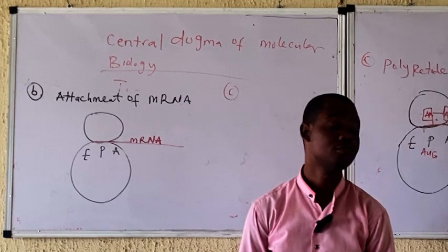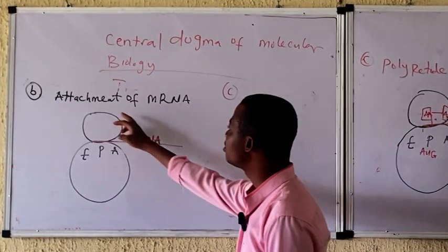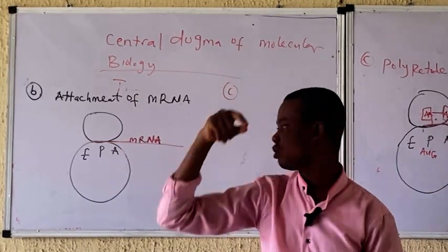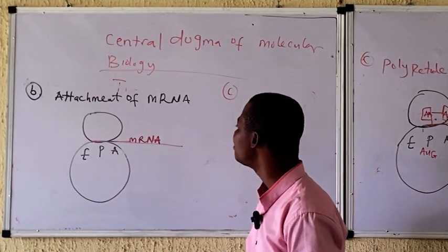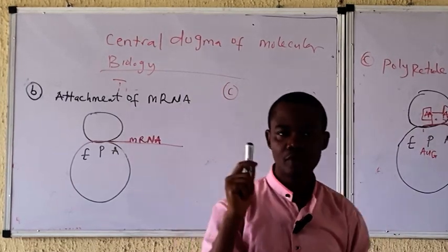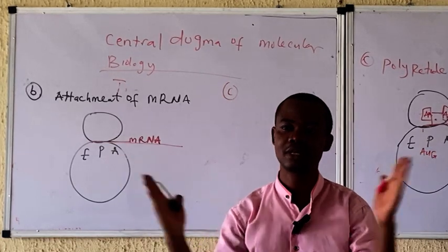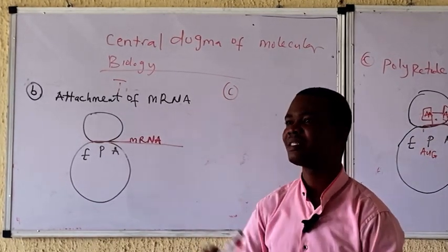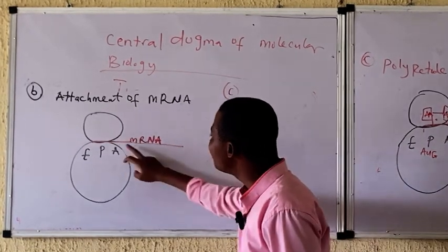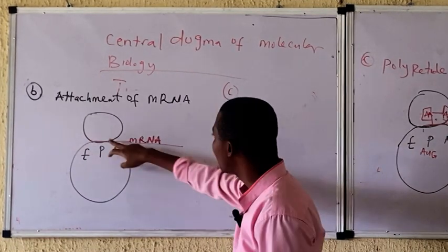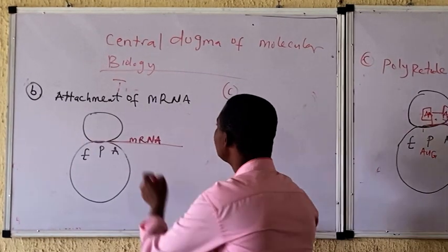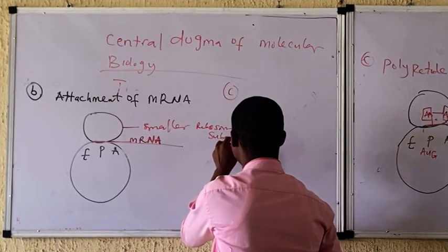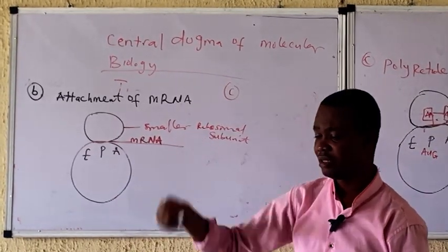The second step in protein synthesis is attachment of mRNA. The mRNA produced during transcription attaches to the mRNA binding site of the smaller ribosomal subunit. Remember, the smaller ribosomal subunit has only one binding site, and that is the mRNA binding site. So the mRNA will come and attach to that binding site.